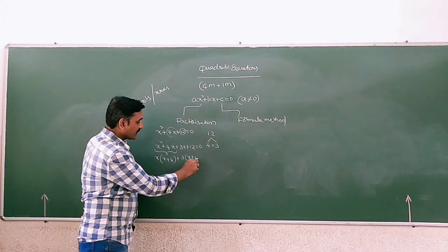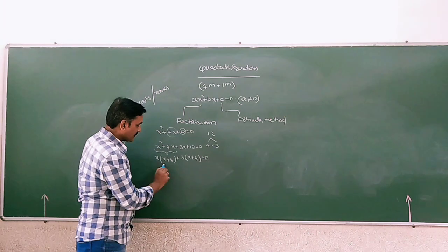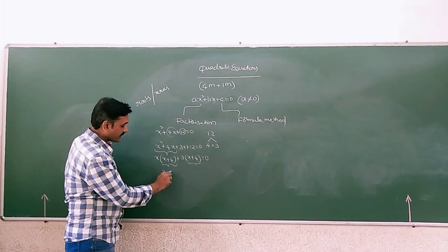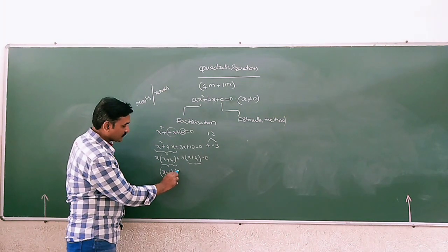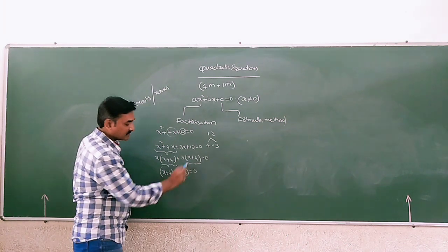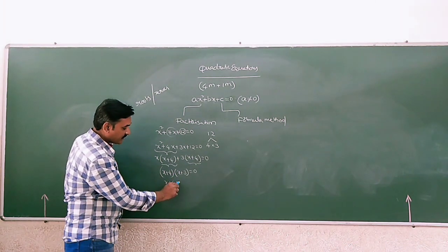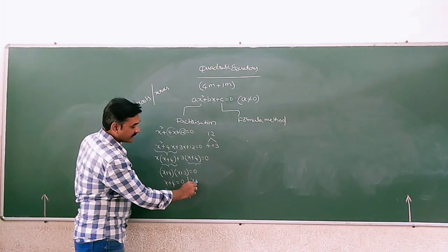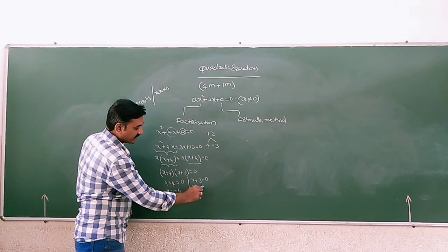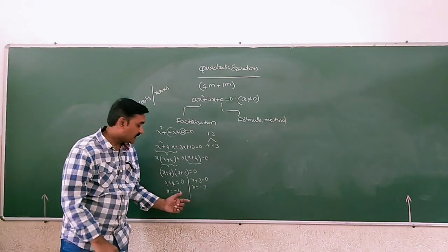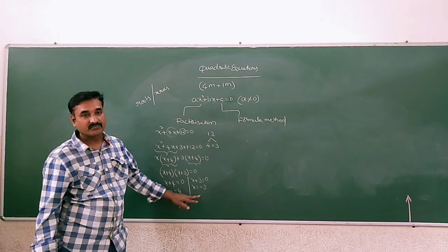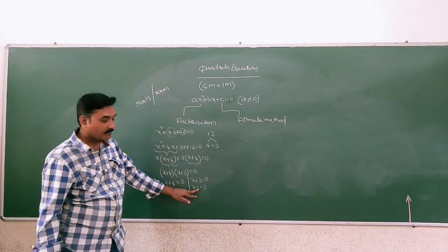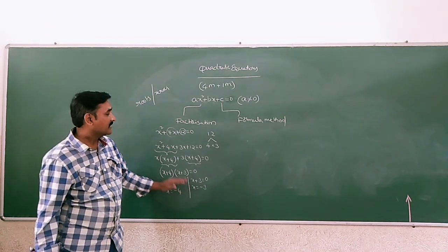In the next two terms, we have 3 as common, so 3(x plus 4) equals to 0. Again we have (x plus 4) as a common term, so we can write (x plus 4)(x plus 3) equals to 0. From this, x plus 4 equals to 0 gives x equals to minus 4, or x plus 3 equals to 0 gives x equals to minus 3. These are the zeros or roots of the quadratic equation — both mean the same thing.